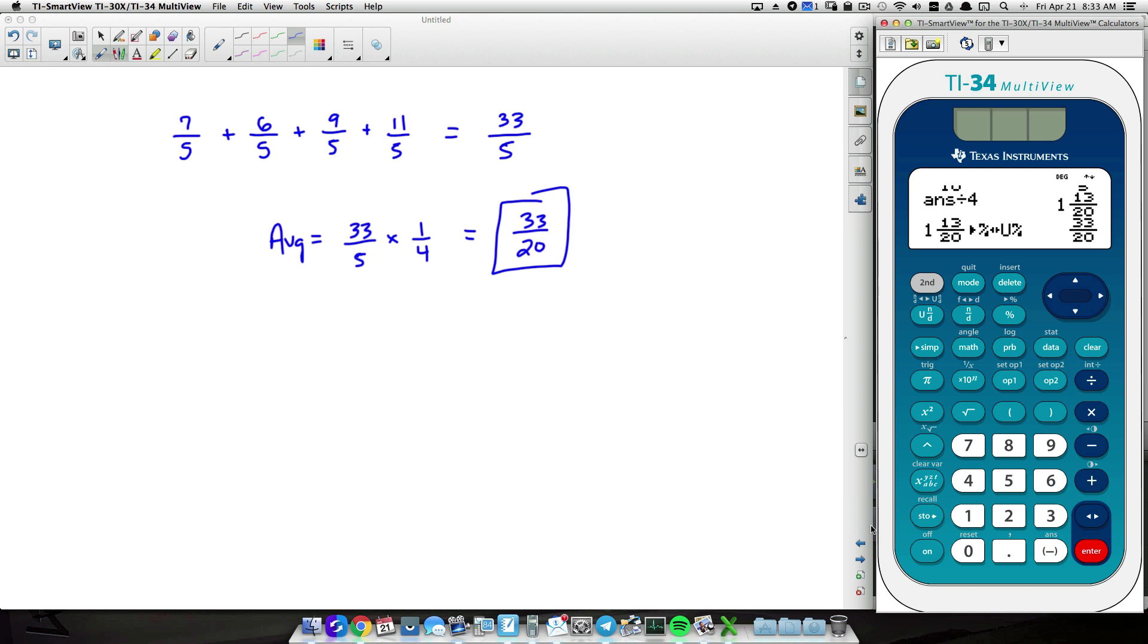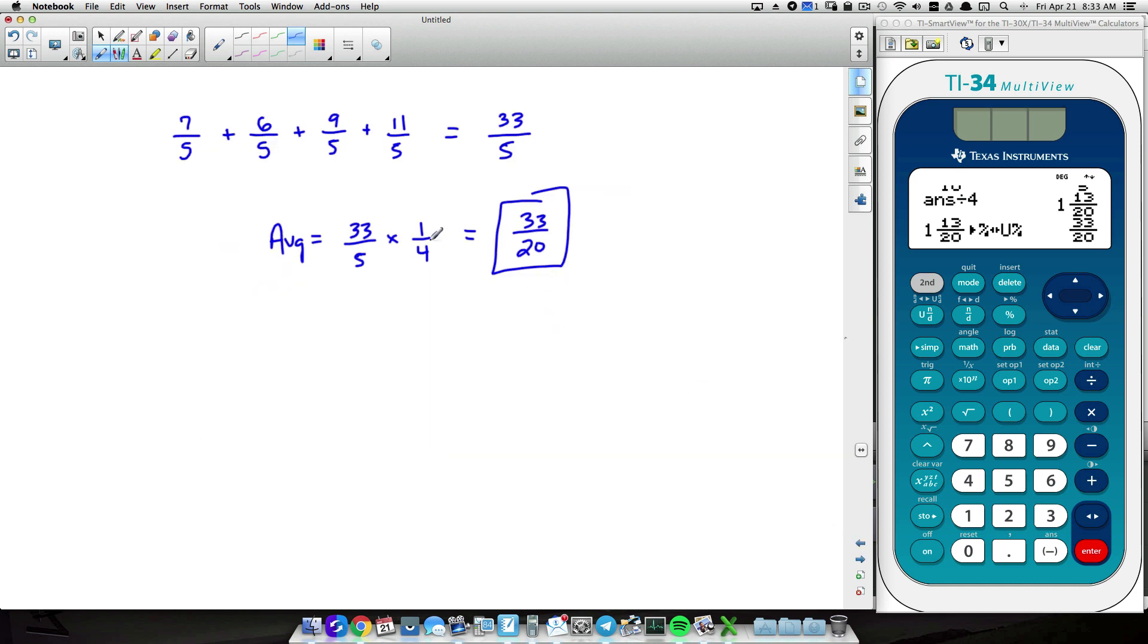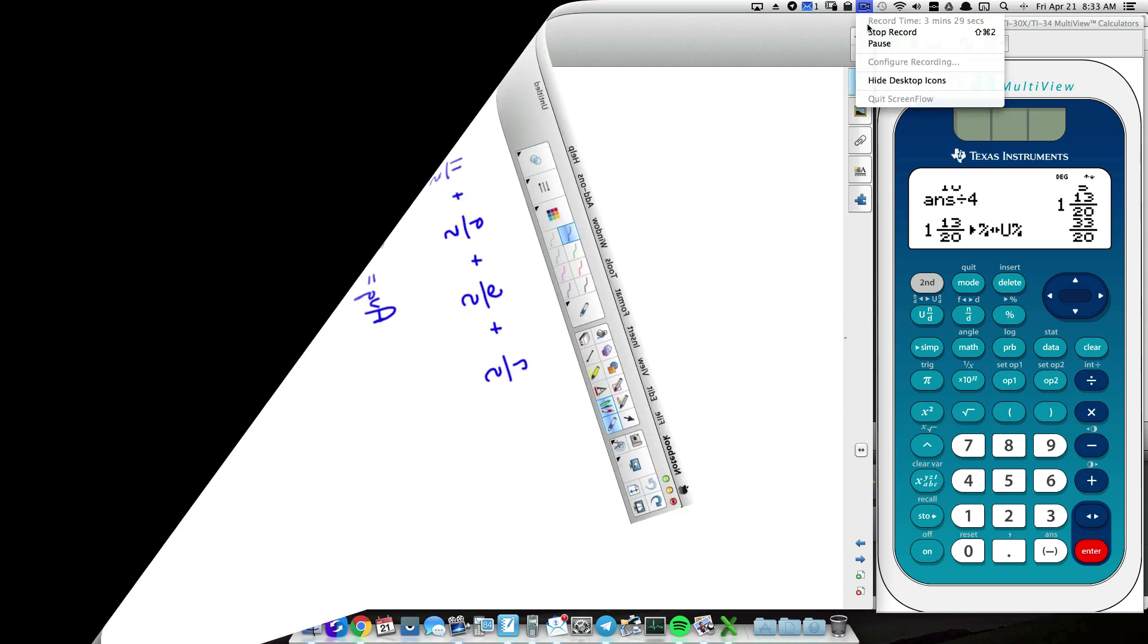And there you have it. Three examples of finding averages of fractions. And the big picture here is this. If you have two fractions, take half of that sum. Three fractions, take a third. Four fractions, take a fourth. And that pattern does continue on no matter how many fractions you have. So there you have it. Three examples of finding averages of fractions. And that is it for this video. I hope it helped.